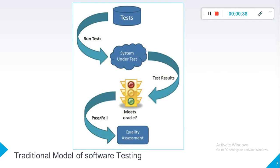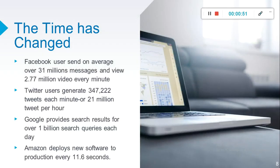In the traditional software testing model, we have tests. We run these tests for the system under test, we get test results, and tests are either pass or fail. Based on this pass or fail criteria, we determine the quality of our product.